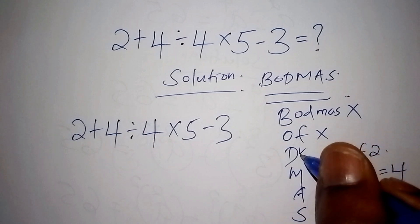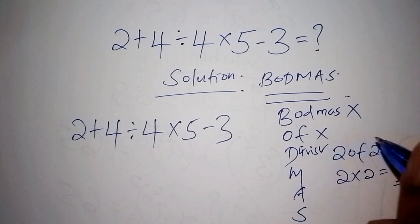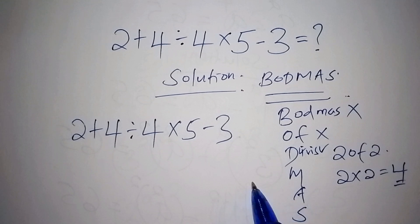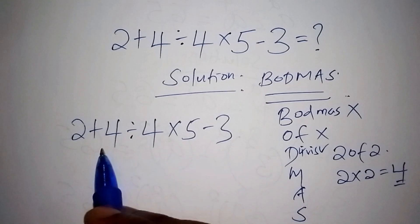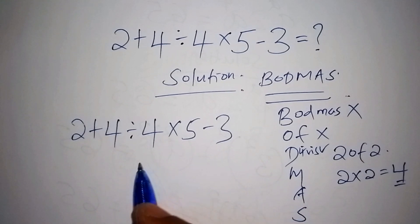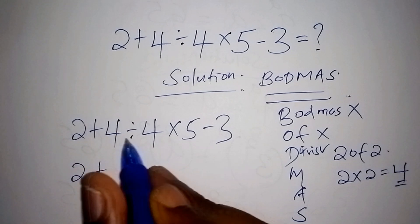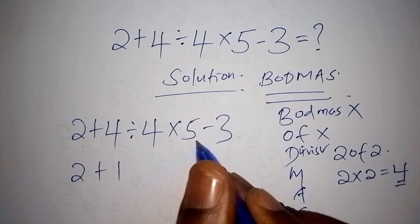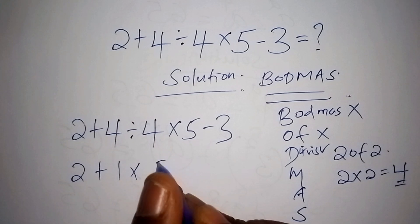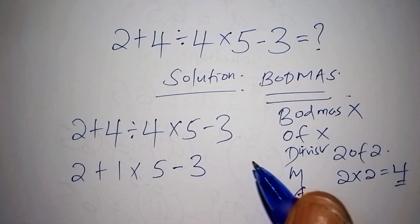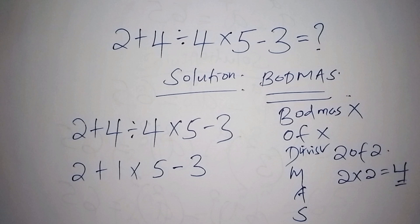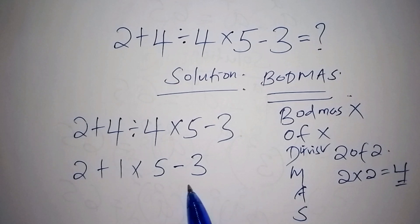So D stands for division. So we have the division, so let us now mark it and work at the division. The division that we are having is 4 divided by 4. So now we shall have 2 plus 4 divided by 4 is 1, then multiply by 5 minus 3.